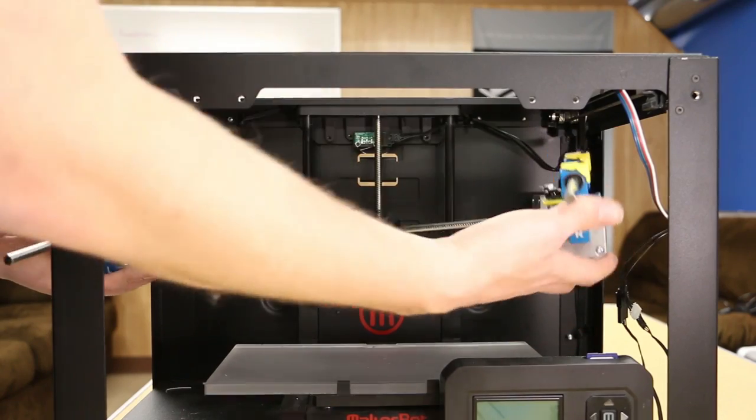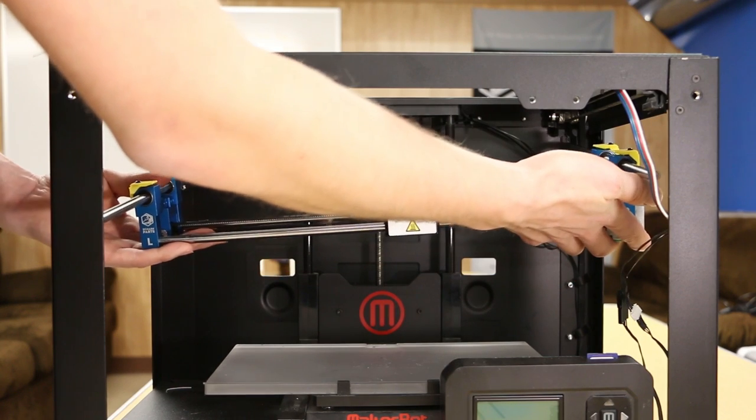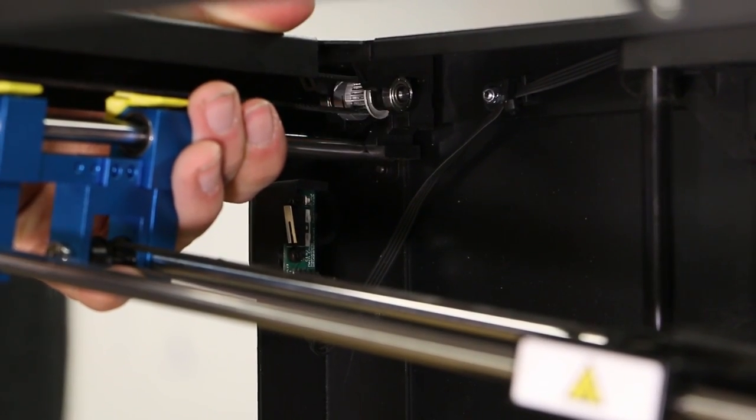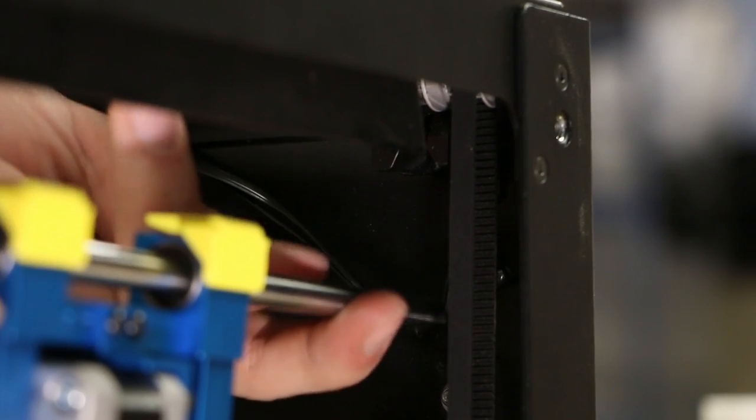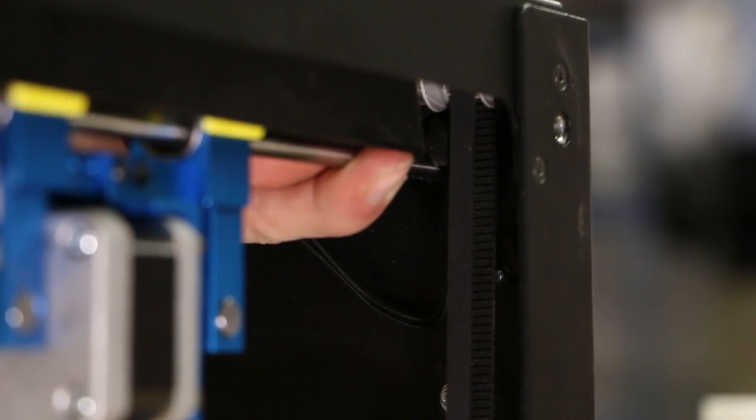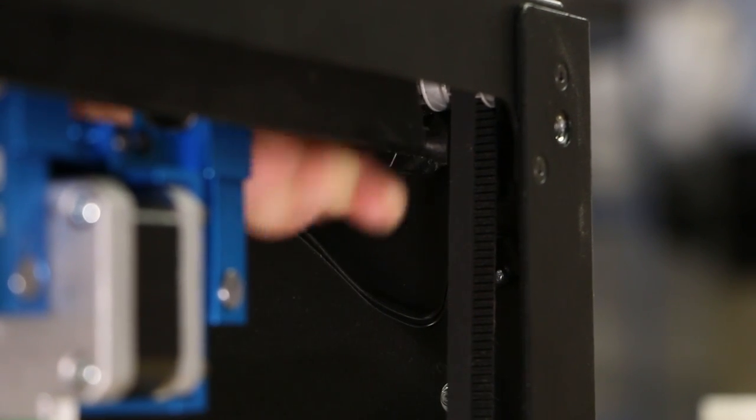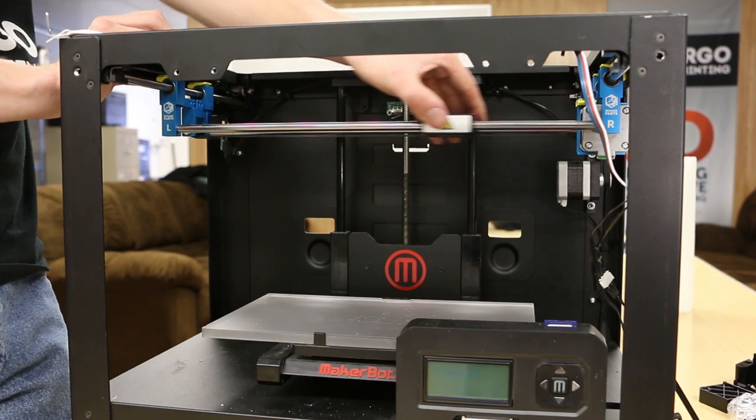Move the entire gantry system into the printer with the L bracket on the left side and the R bracket on the right side. In the back left corner, press the linear rod into place. You'll hear a loud click. Do the same for the front left, rear right, and front right. Make sure no cables get caught between the rod and the bracket. The gantry system should move freely in all directions.